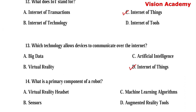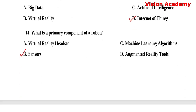Question number 14. What is a primary component of a robot? Option A: Virtual reality headset. Option B: Sensors. Option C: Machine learning algorithms. Option D: Augmented reality tools. Here, option B, sensors, is the right answer.